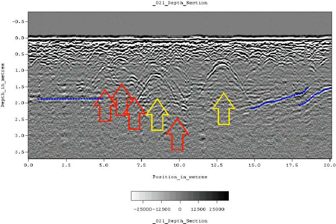Ground-penetrating radar is a geophysical method that uses radar pulses to image the subsurface. This non-destructive method uses electromagnetic radiation in the microwave band of the radio spectrum and detects the reflected signals from subsurface structures.